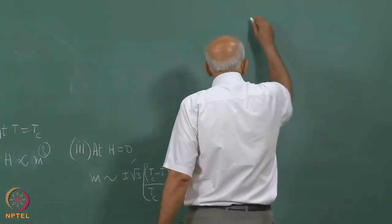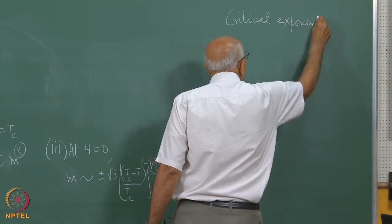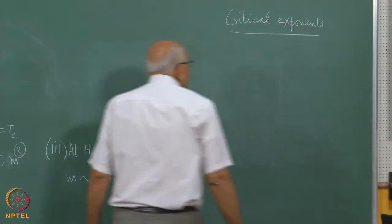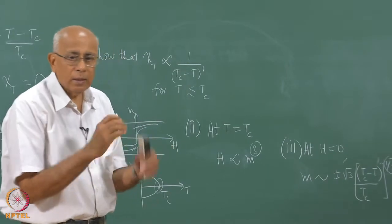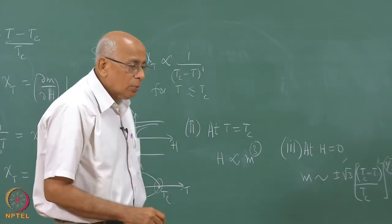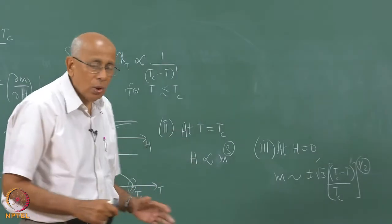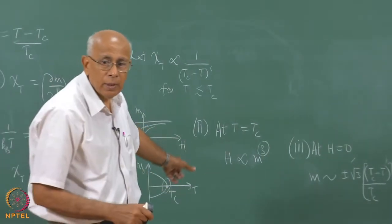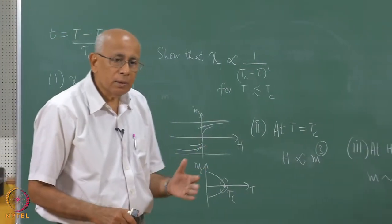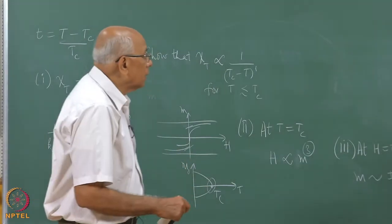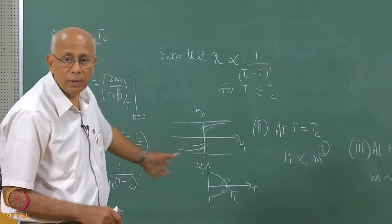Experimentally there is a whole set of critical exponents defined by various power laws near a critical point. These critical exponents have values which are universal for different universality classes. For the Ising model universality class, which is what we are dealing with here, you have one set of exponents; for the Heisenberg universality class you have another set, and so on. These we have computed are the mean field exponents.